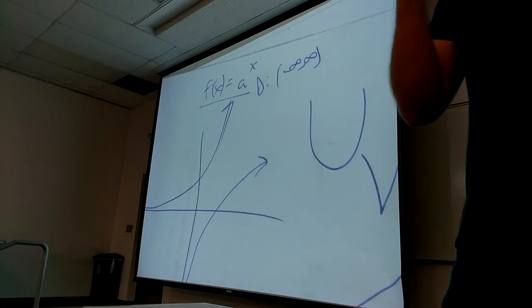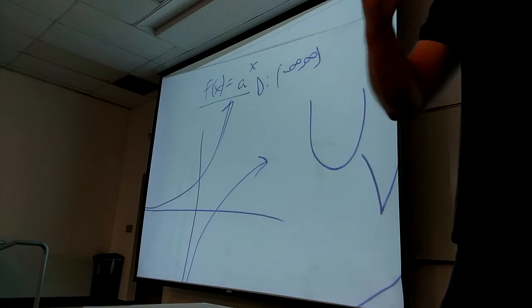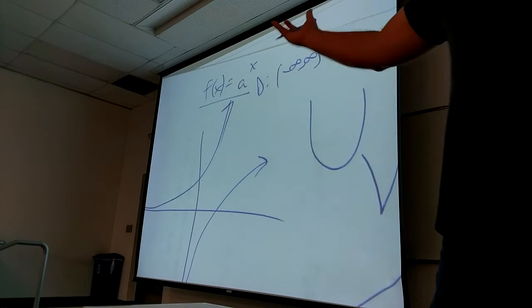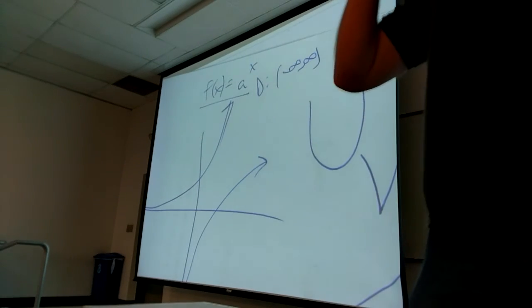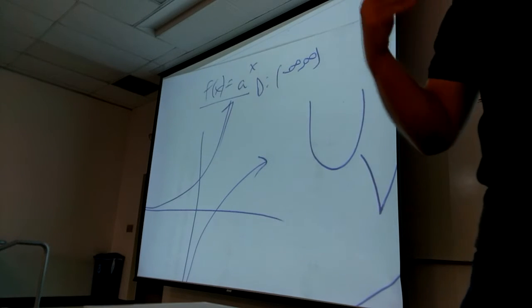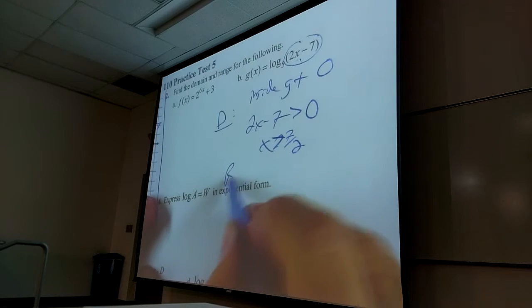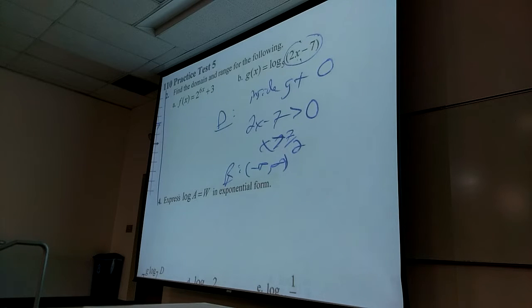Any exponential function I give you — if I ask what the domain is, the answer is negative infinity to infinity. Any logarithm I give you — if I ask what the range is, the answer is negative infinity to infinity. One guy's domain is the other guy's range. This guy's range is going to be negative infinity to infinity because it's a logarithm. It goes forever up and down — all possible outputs.